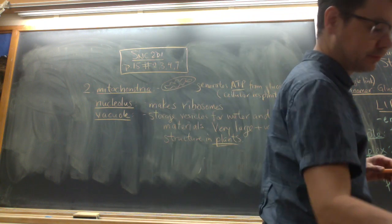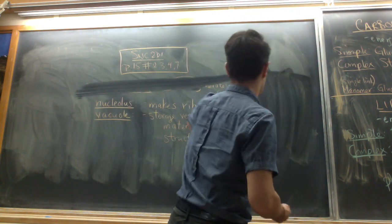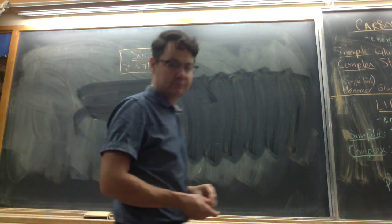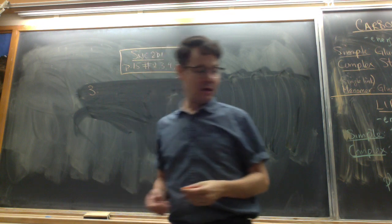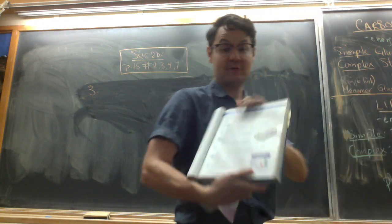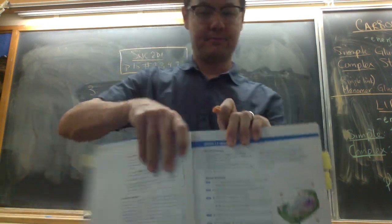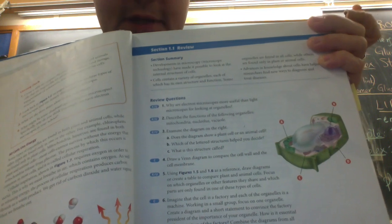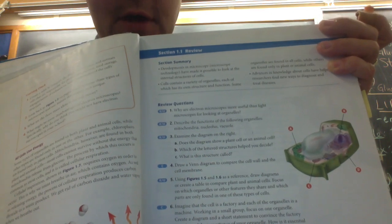Next. Number three. We're examining this diagram. So if you don't see that diagram, there it is here. Does it show a plant cell or an animal cell? Well, that very large vacuole in the middle suggests that it's a plant cell.